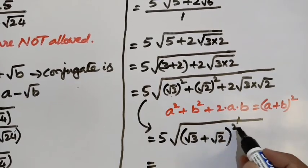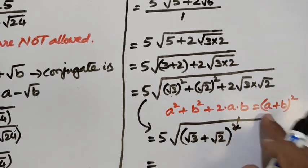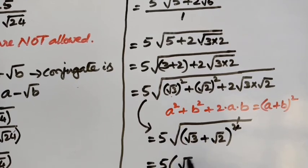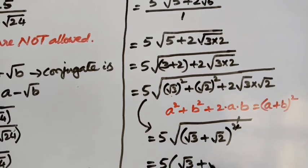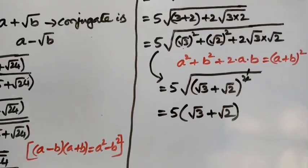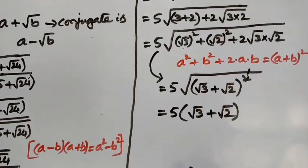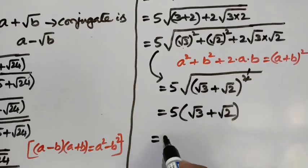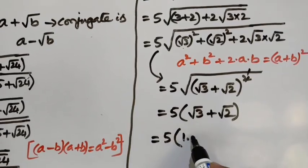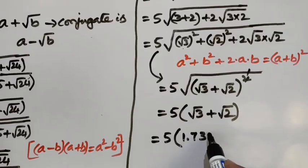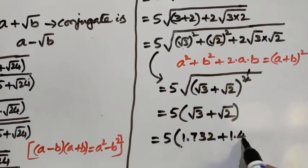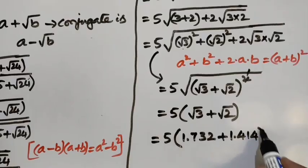Cancelling the square root and square, we get 5 into root 3 plus root 2. So the simplified answer is 5 times root 3 plus root 2. If we want to further simplify numerically, root 3 is 1.732 and root 2 is 1.414.